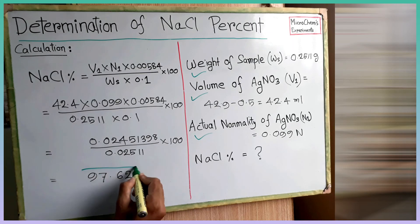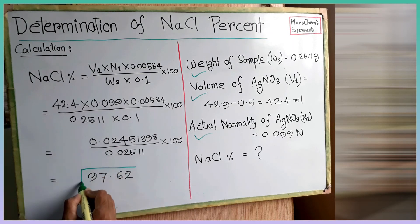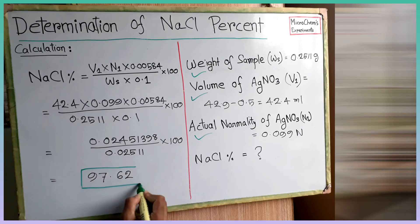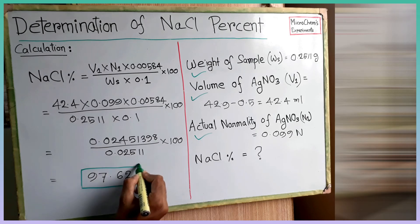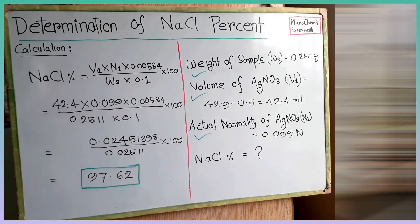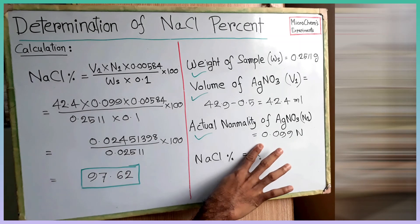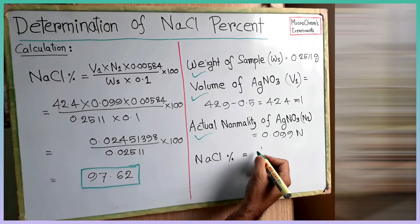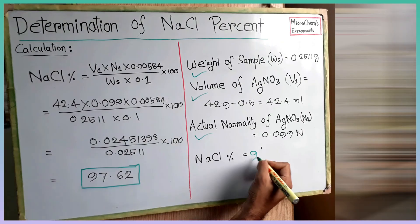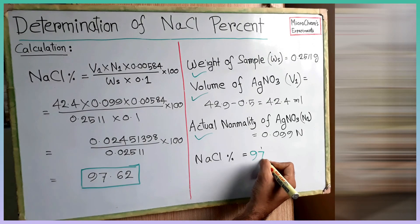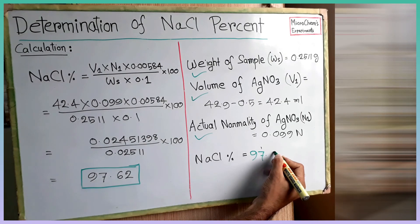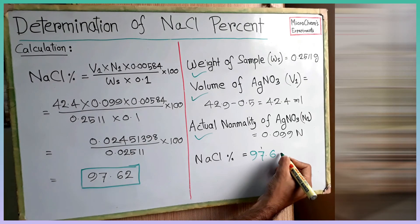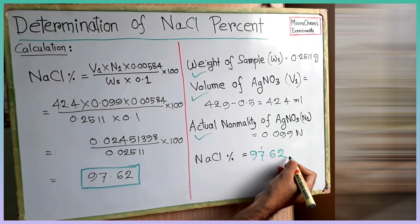By solving the equation we got a value of 97.62. So the sodium chloride percent of the tested salt is 97.62%.